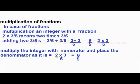Multiplication in case of fractions: multiplying an integer with a fraction. 2 into 3 by 5 means 2 times 3 by 5, that is 3 by 5 plus 3 by 5, which equals 3 plus 3 by 5, so 6 by 5. The rule: multiply the integer with the numerator and place the denominator as it is. That is, 2 into 3 by 5 equals 6 by 5.